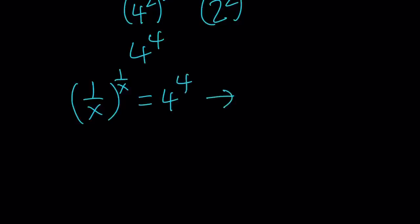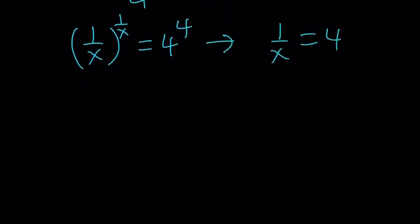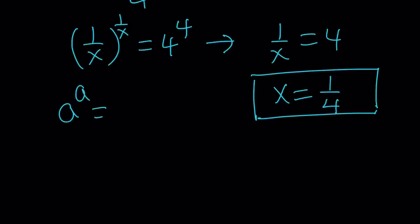1 over x to the power 1 over x equals 4 to the 4th power. And from here I can safely say that 1 over x equals 4. The million dollar question is, is this the only solution? x equals 1 fourth. Obviously that's a solution. What about other solutions? So if you have something like a to the power a equals 4 to the power 4, do we get only one solution or more than one solution? So let's go ahead and take a look at the graph.